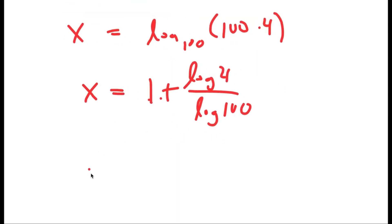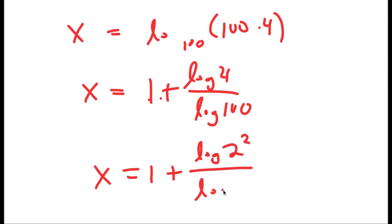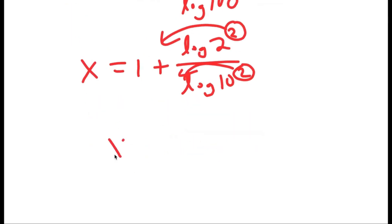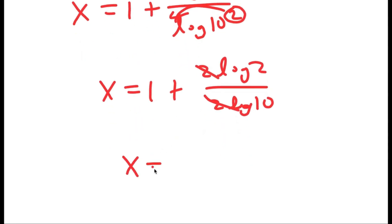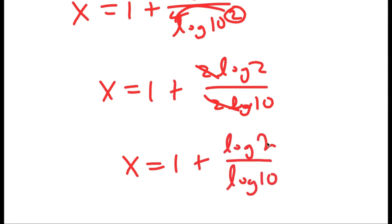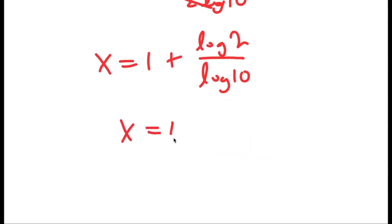Now log of 4 is the same thing as log of 2 squared, and log of 100 is the same thing as log of 10 squared, so I can move the 2 to the front in both cases. I get x is equal to 1 plus 2 log 2 over 2 log 10. The two 2s cancel out, so x equals 1 plus log 2 over log 10, which is 1 plus 0.301, so x is equal to 1.301.